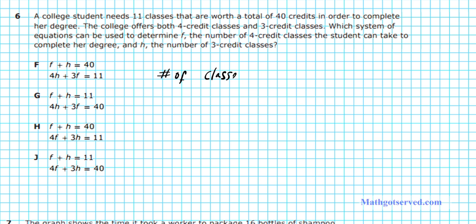We have two sets of classes: the 4-credit classes and the 3-credit classes. How many of each? We have F 4-credit classes plus H 3-credit classes, which gives you the total amount of classes. She needs 11 classes in all. So that's the first equation.